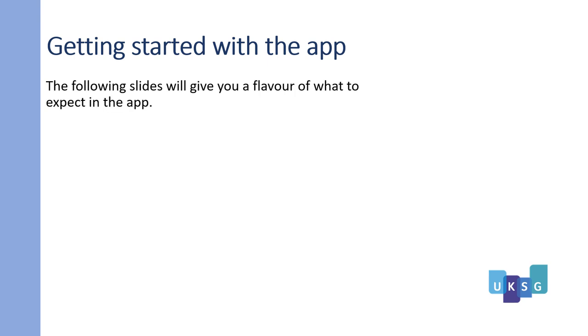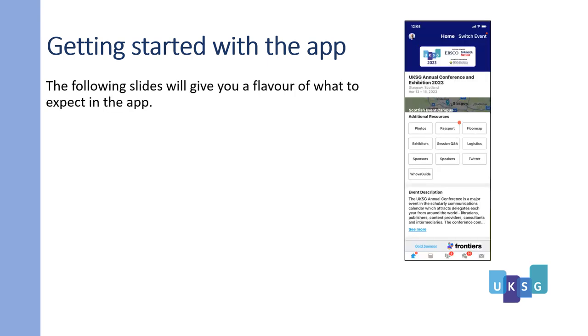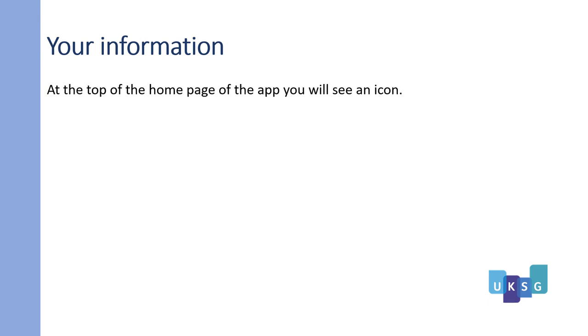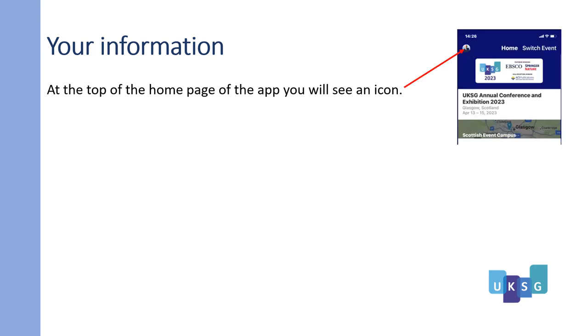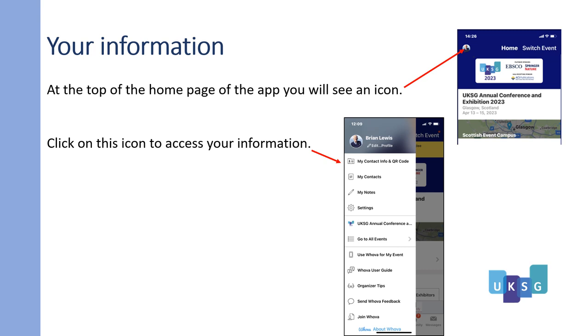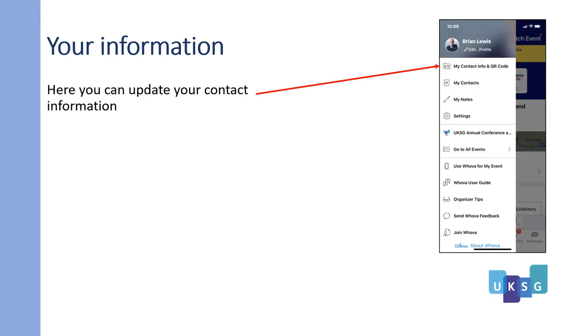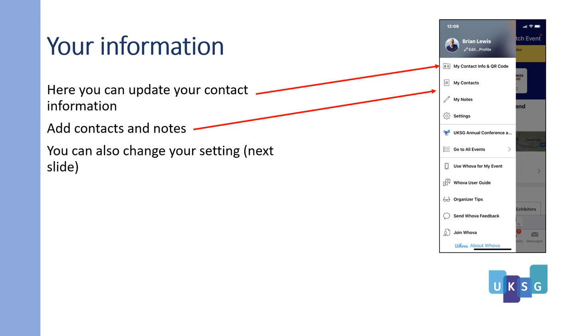Getting started with the app. The following slides will give you a flavour of what to expect. Let's look at the information the app holds about you. At the top of the home page of the app, you will see an icon — click on this icon to access your information. Here you can update your contact information, add contacts and notes, and also change your settings.